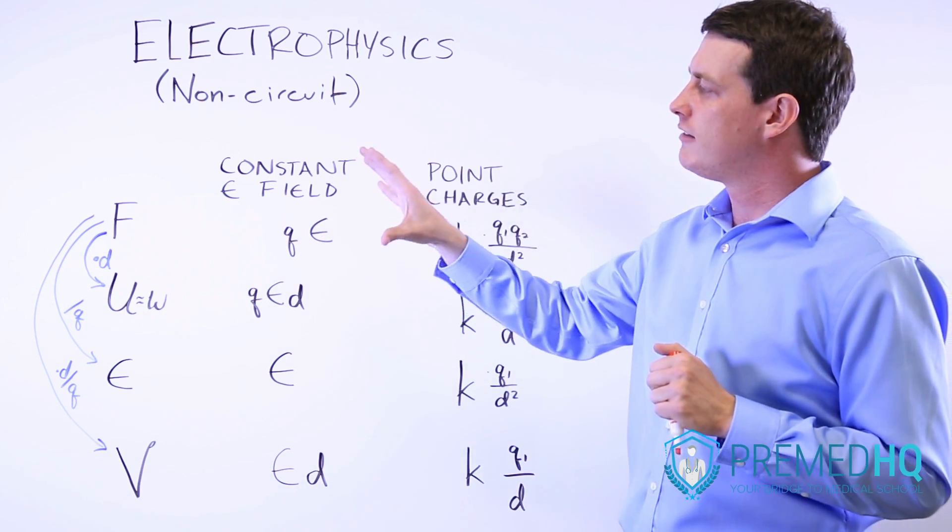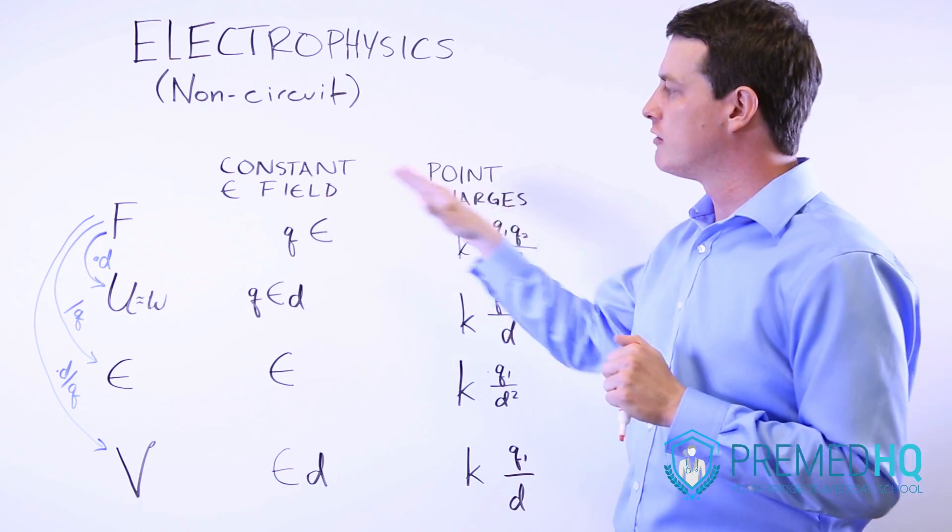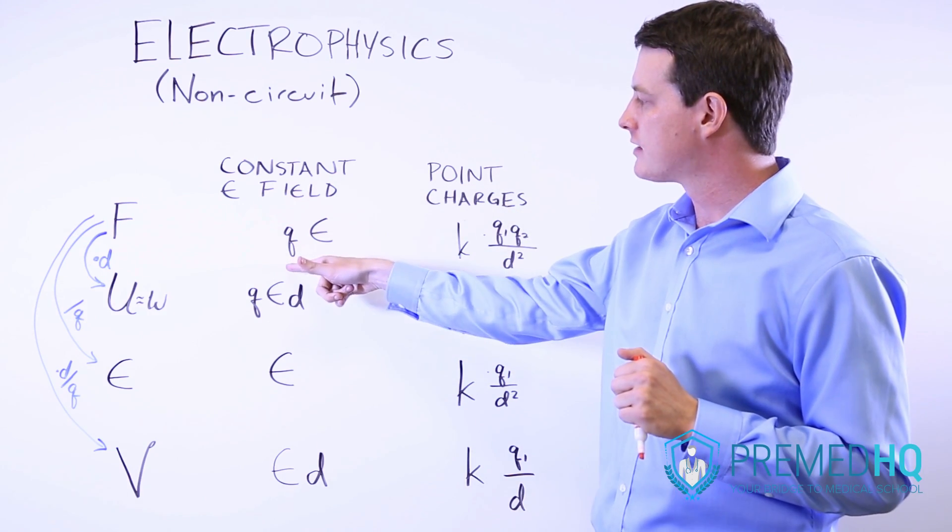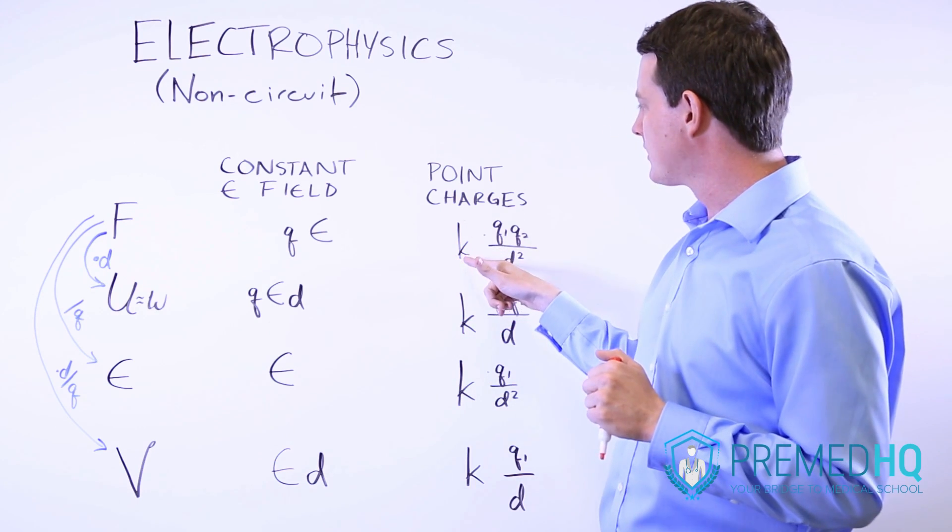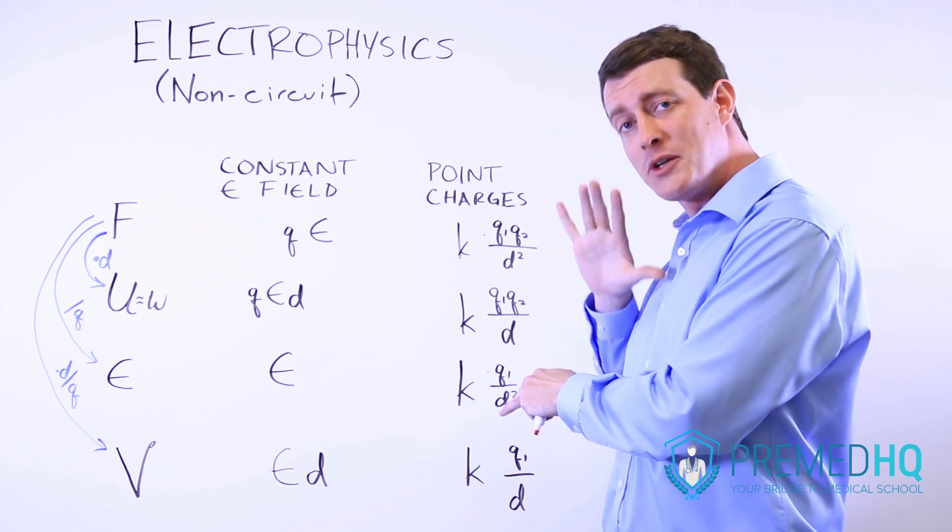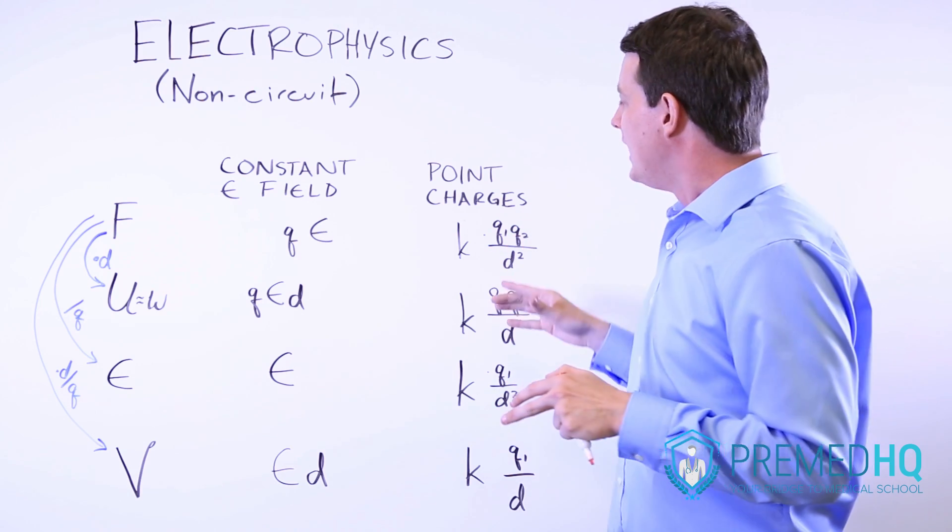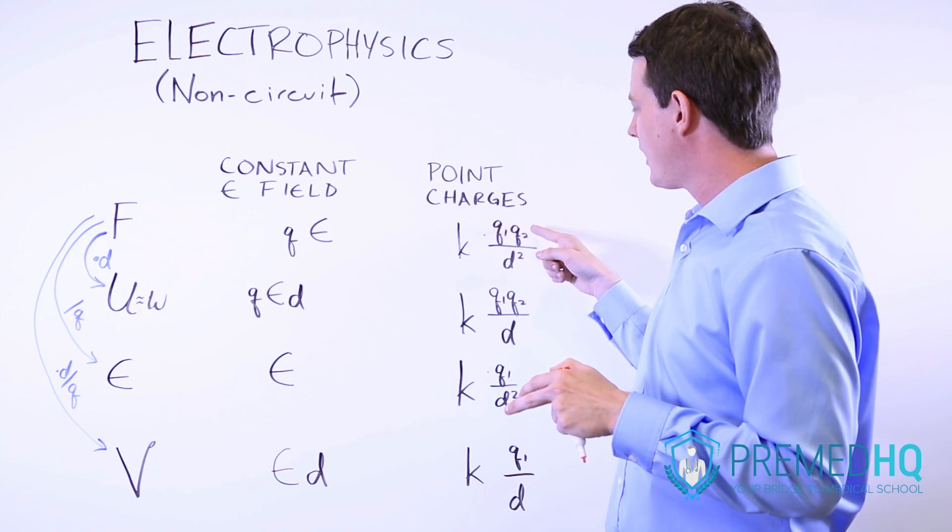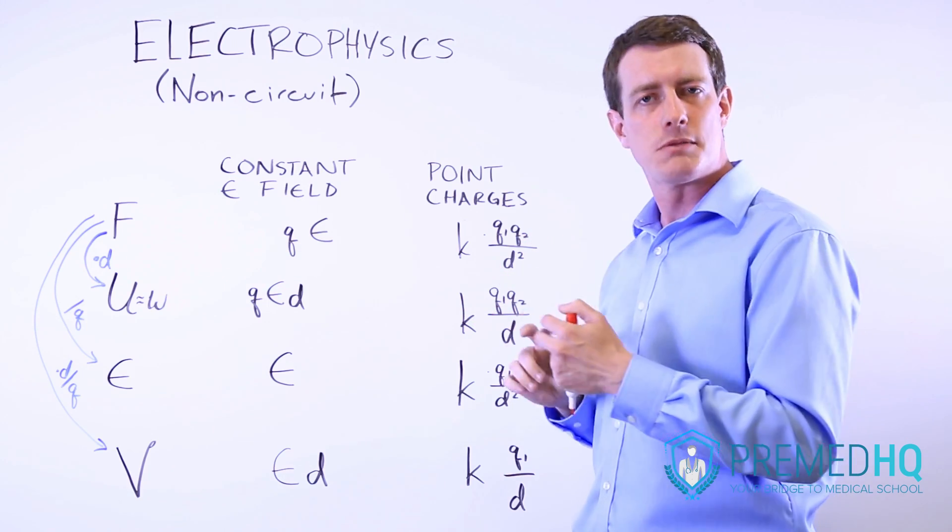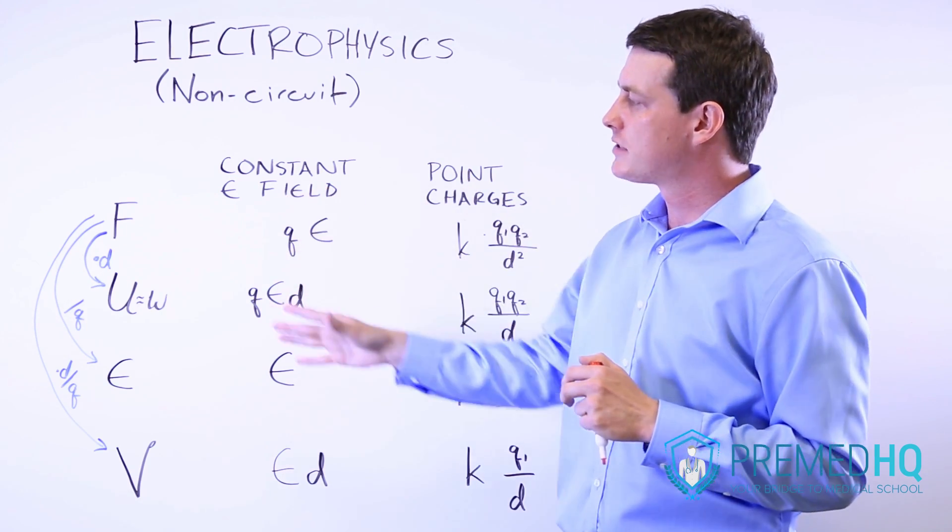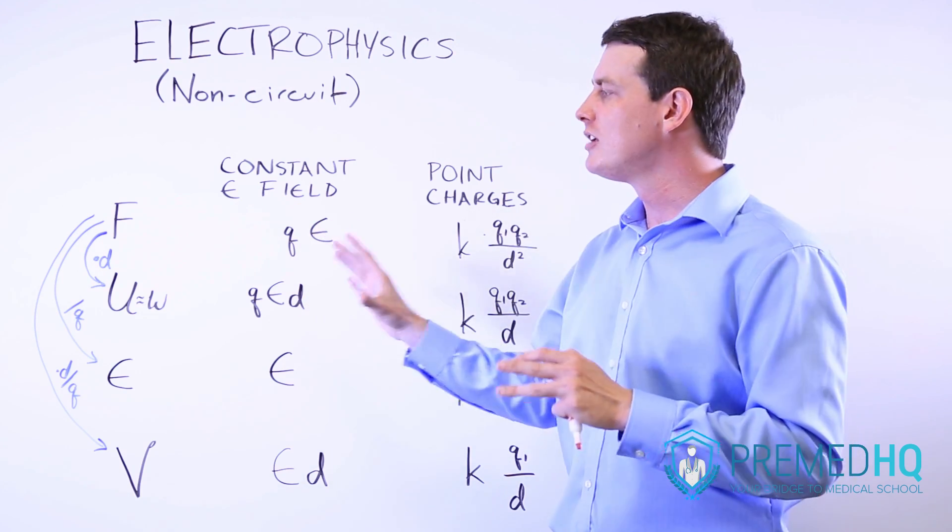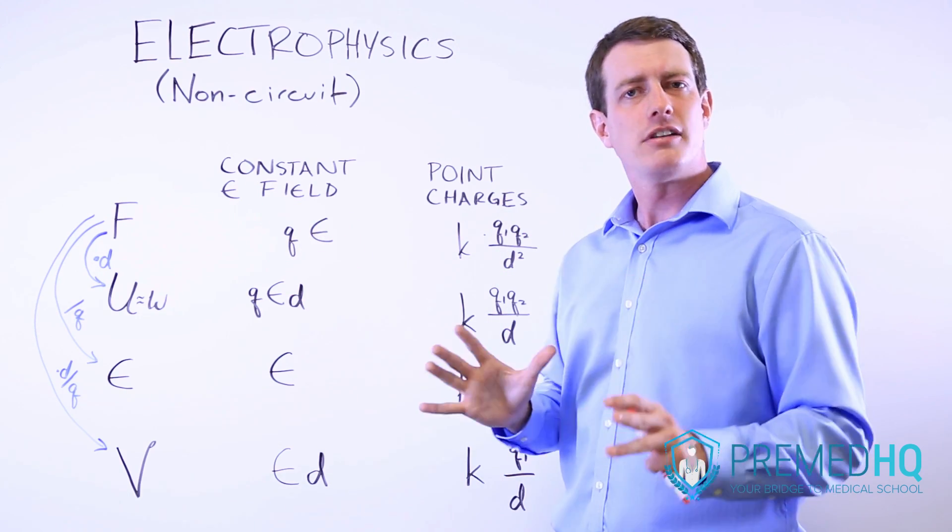We've already covered in physics the two major force formulas. One of them is QE, and that's if you have a constant field. And the other one is K, which is your electrical constant, they'll give that to you, you don't have to memorize that for the MCAT. And Q1 times Q2 divided by the distance between them squared. Once you have that, then you can make some simple adjustments to derive all of the other formulas in a fairly intuitive way.